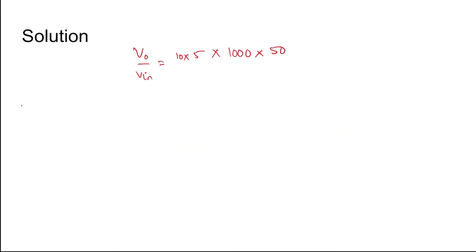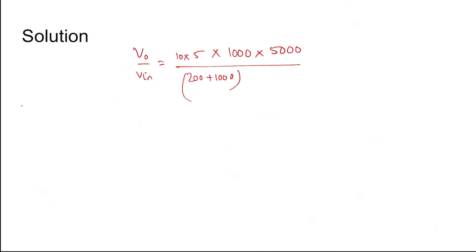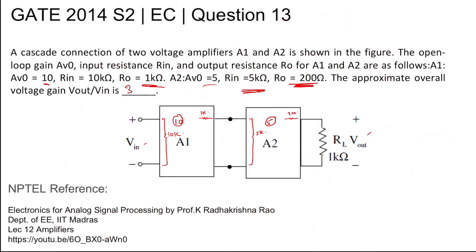Continuing the calculation: RL = 1000 Ω, Ri2 = 5000 Ω, RL + Ro2 = 1000 + 200 = 1200, and Ro1 + Ri2 = 1000 + 5000 = 6000. Putting it all together, the overall gain Vout/Vin comes out to be 34.72.